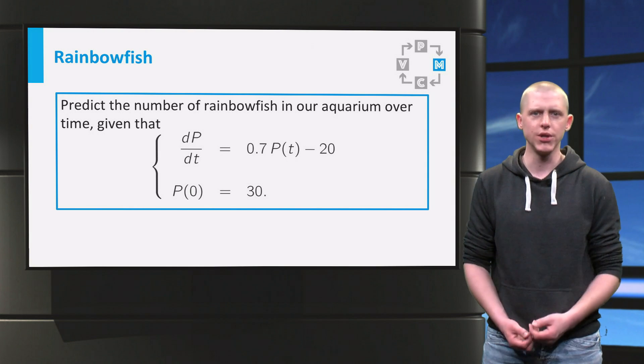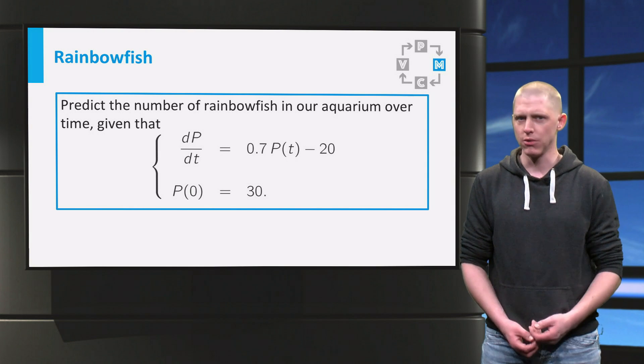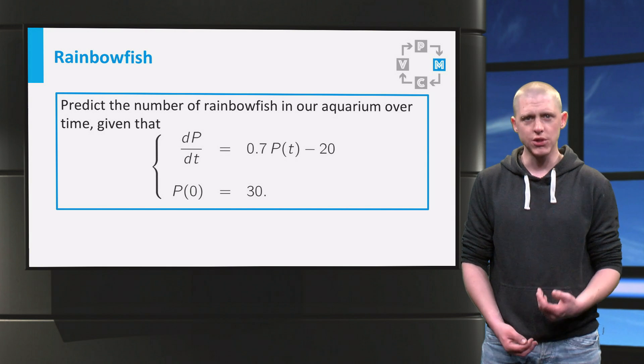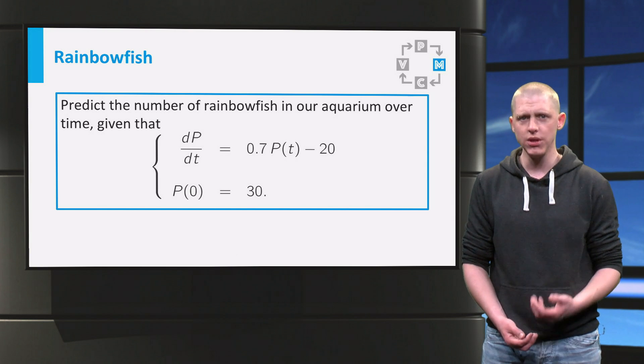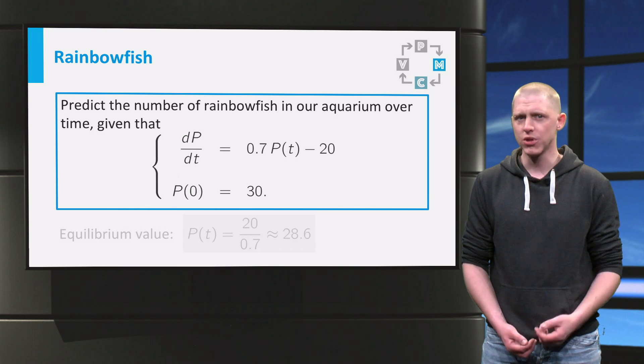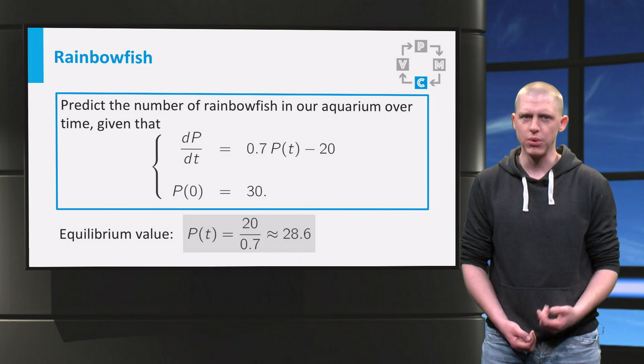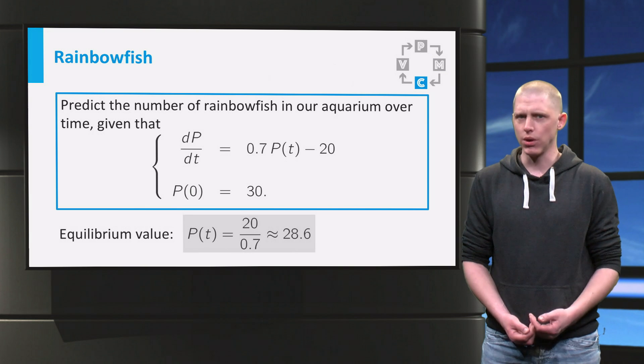Consider the following differential equation for some population of rainbow fish p. If you set the rate of change of the population p to zero and solve for p, you obtain one equilibrium solution, p equals approximately 28.6.